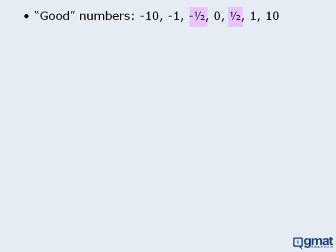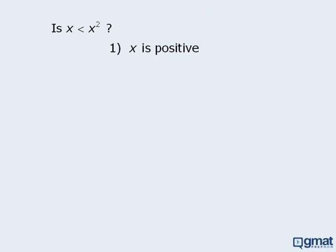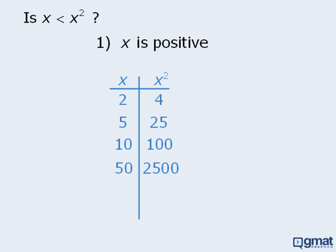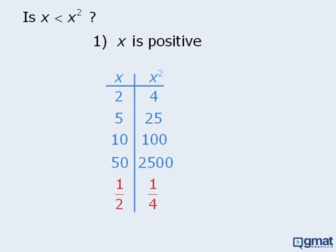These aren't the only numbers you should consider when using the table method, but they are a good start. Here's a question from the last lesson that illustrates the utility of negative one-half and one-half. In most cases, when we take a positive number and square it, the squared number is larger than the original number: 2 squared becomes 4, 5 squared becomes 25, 10 becomes 100, and so on. However, numbers between 0 and 1, such as one-half, become smaller when squared. This concept is tested often on the GMAT, so watch out for it.